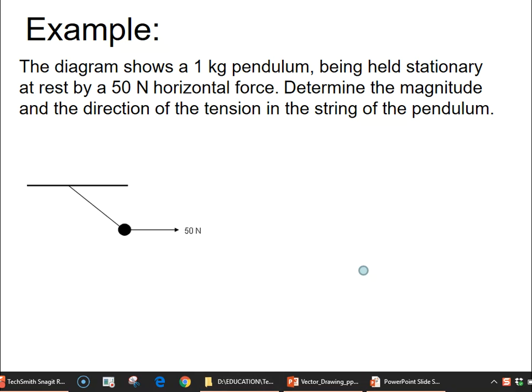Now, the diagram shows a 1kg pendulum being held stationary at rest by a 50N horizontal force. Determine the magnitude and direction of the tension in the string of the pendulum.